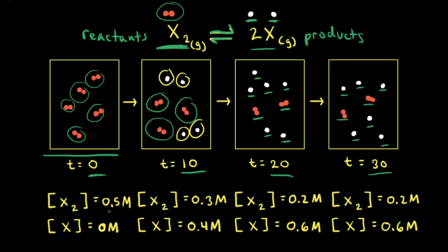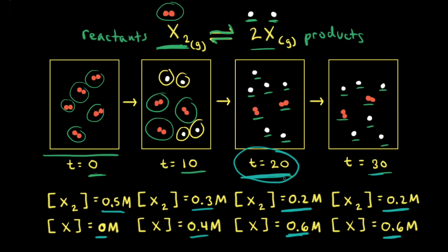The concentration of X2 went from 0.5 molar to 0.3 molar to 0.2 molar, and stayed at 0.2 after 30 seconds — it became constant at time equal to 20 seconds. The concentration of X went from 0 to 0.4 to 0.6 molar, and also became constant at 20 seconds. This means the reaction reached equilibrium after 20 seconds. At equilibrium, the rate of the forward reaction equals the rate of the reverse reaction, so X2 is being turned into 2X at the same rate that 2X is being turned back into X2, and the concentrations remain constant.